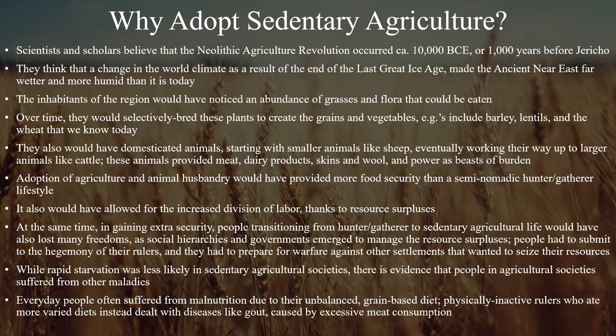These people also would have domesticated animals, starting with smaller animals like sheep, and eventually working their way up to larger creatures like cattle. These animals provided meat, dairy products, skins and wool, and power as beasts of burden. Horses would not be brought to the ancient Near East until about 2500 BCE — horses are native to Central Asia, much further to the north. Adoption of agriculture and animal husbandry would have provided more food security than a semi-nomadic hunter-gatherer lifestyle.